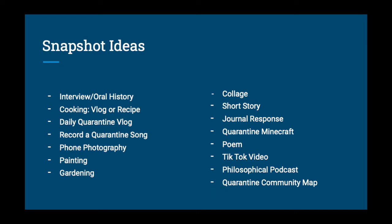Here are some ideas you could use to create your snapshots: an interview or oral history, favorite recipes you've come up with or learned during quarantine, a daily quarantine vlog about life in the Bay Area, a quarantine song, phone photography, painting, gardening, a collage, a short story, a journal response, a quarantine Minecraft build of Life Academy school, a poem, a TikTok video, a philosophical podcast, or a quarantine community map. If you have other creative ideas, feel free to ask your teachers.